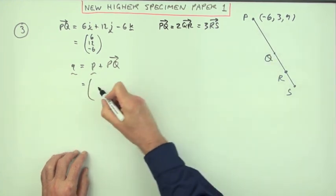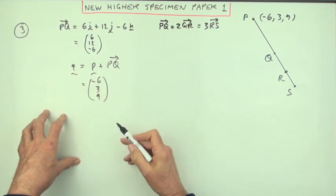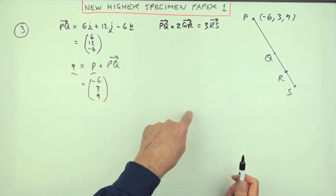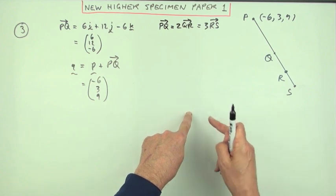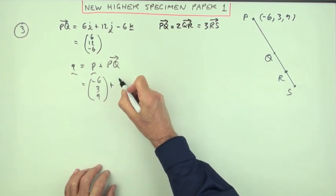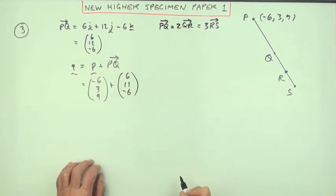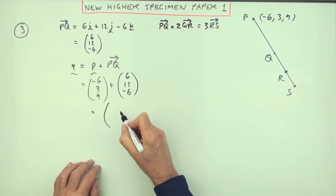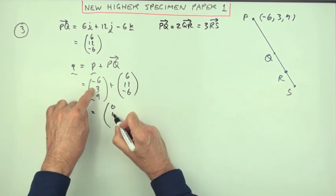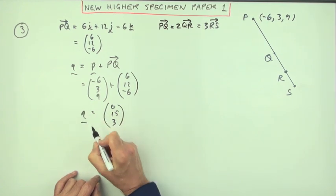So setting that out, P's at (-6, 3, 9) - that was the position vector from the starting platform, the origin, that's what you had to do to get to the first pillar. And now how do we get to the second pillar? 6, 12, -6 - follow those instructions. When you add those together you've got 0, 15, 3.